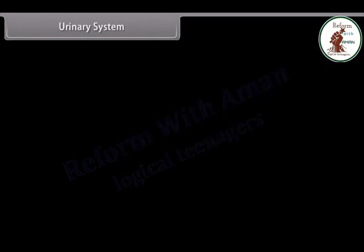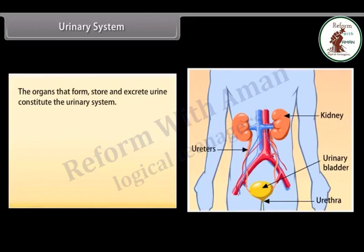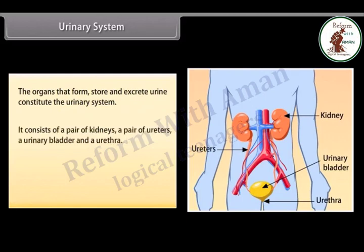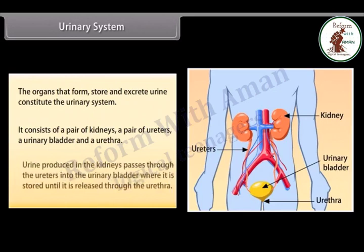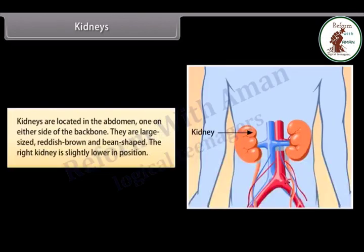The urinary system: the organs that form, store, and excrete urine constitute the urinary system. It consists of a pair of kidneys, a pair of ureters, a urinary bladder, and a urethra. Urine produced in the kidneys passes through the ureters into the urinary bladder, where it is stored until it is released through the urethra.